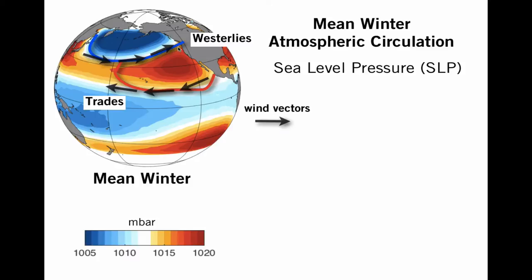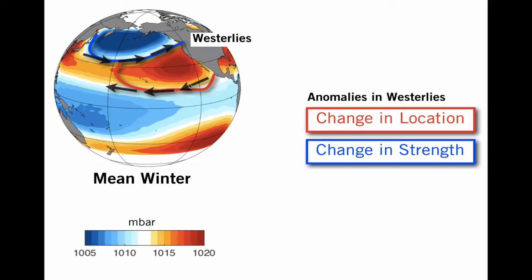In terms of atmospheric variability, there are two types of variability that impact this atmosphere. One is a change in the location of the westerlies — for example, a north or southward shift of this trajectory. The other one is simply a change in the strength of the westerlies themselves.